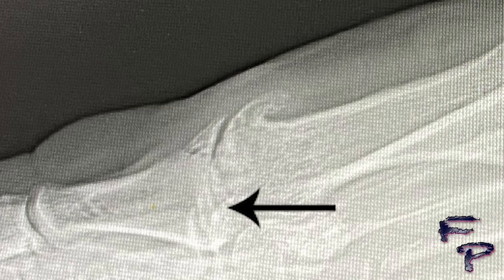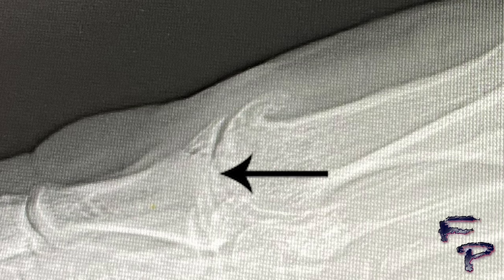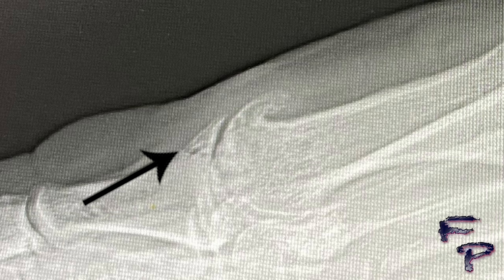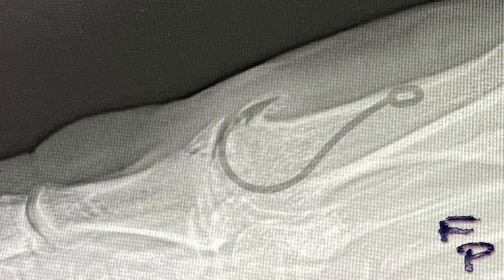First metatarsus primus elevatus is the name of the condition in which the first metatarsal is dorsiflexed. You can clearly see bone rubbing on bone throughout the entire joint. You can also see that the proximal phalanx base has fractured — this is also causing pain and discomfort. There is also a hook-like dorsal osteophyte, or bone spur.